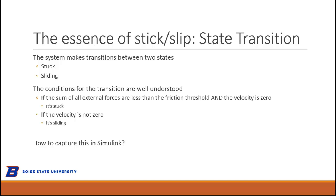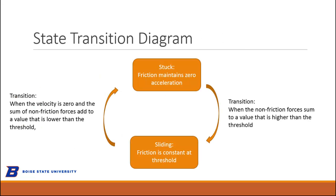The conditions that move the system from one state to another are really well understood. If the sum of the forces is less than the maximum friction force and the velocity is zero, then it's stuck. But if the velocity is not zero, it's sliding by definition. So it's about knowing how to find when it moves from one state to the other. That's important. We can draw what's called a state transition diagram.